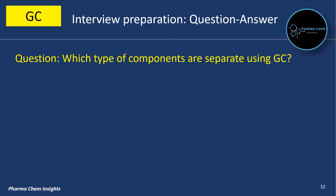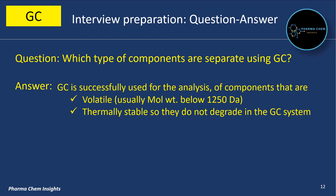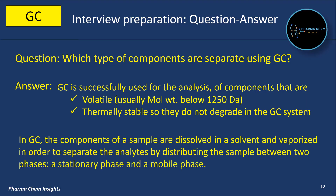Which types of components are separated using gas chromatography? Generally, volatile components that can be converted into vaporized states are separated, and the component should also be thermally stable so they do not degrade in the GC system. The components of a sample are dissolved in a solvent and vaporized in order to separate the analytes by distributing the sample between two phases: a stationary phase and a mobile phase.